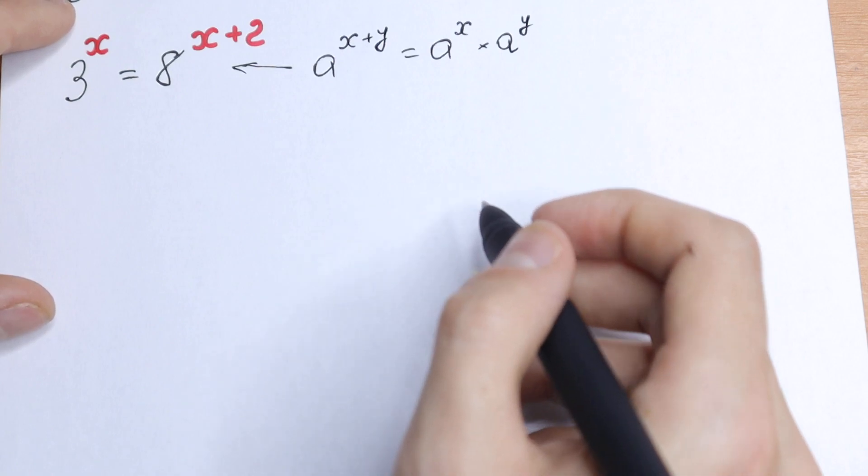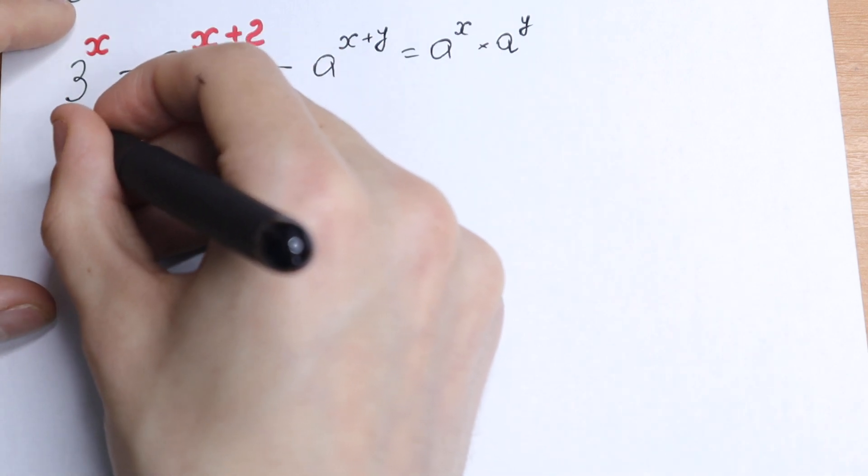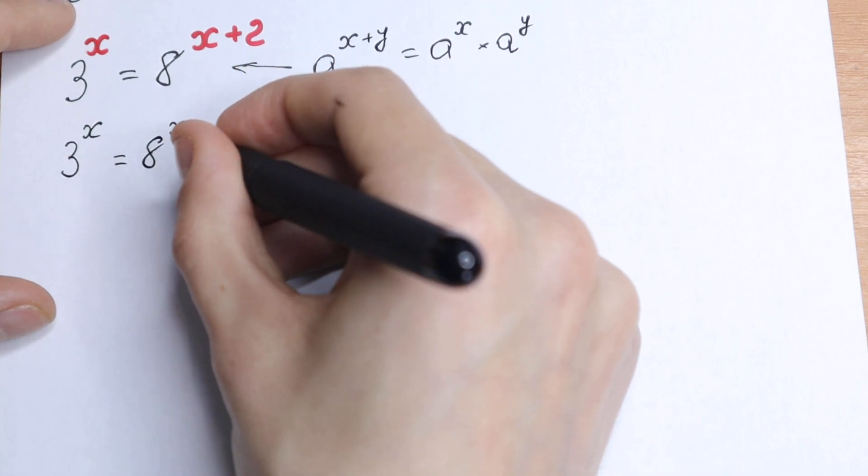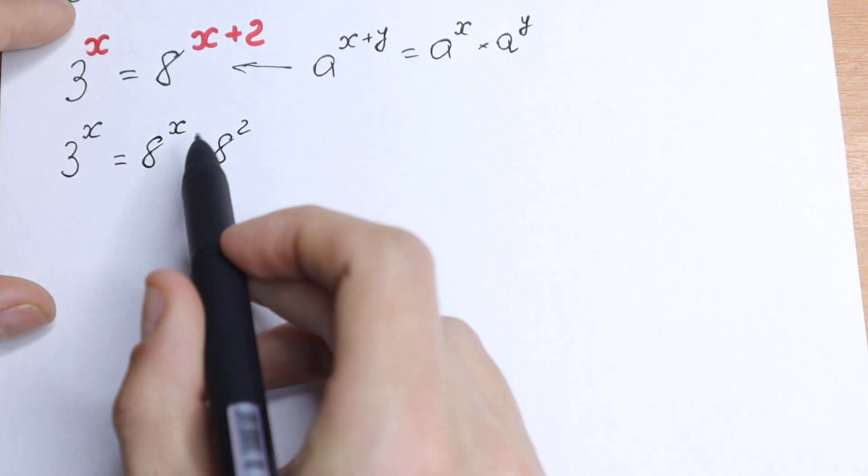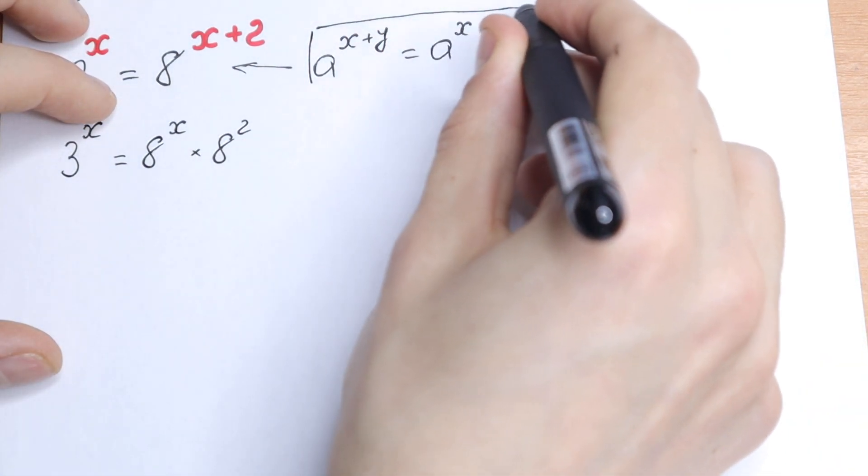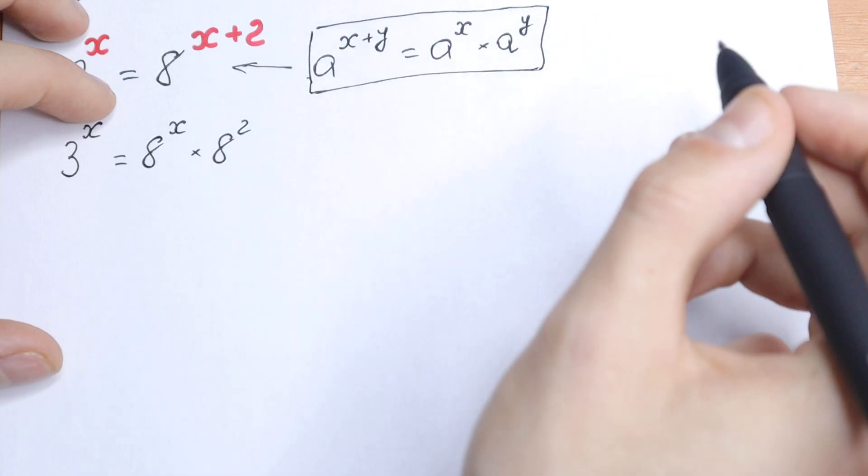What we will have? We will have 3 to the power x equal to 8 to the power x times 8 square. Just use this rule right here on the right. This is a good rule to know, to remember, so learn this or remember this rule.